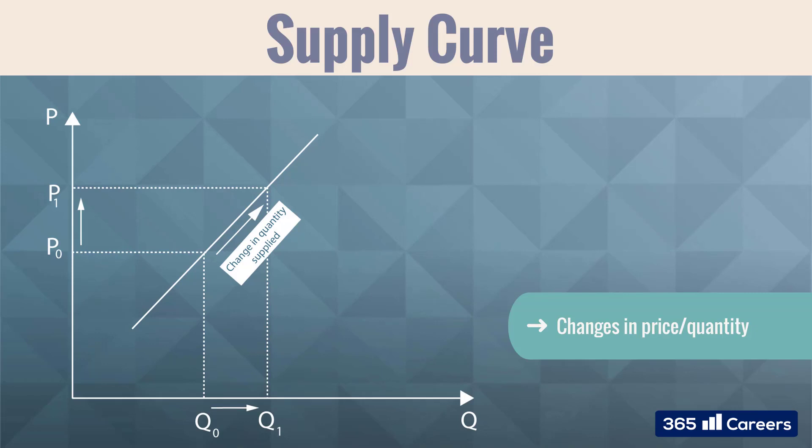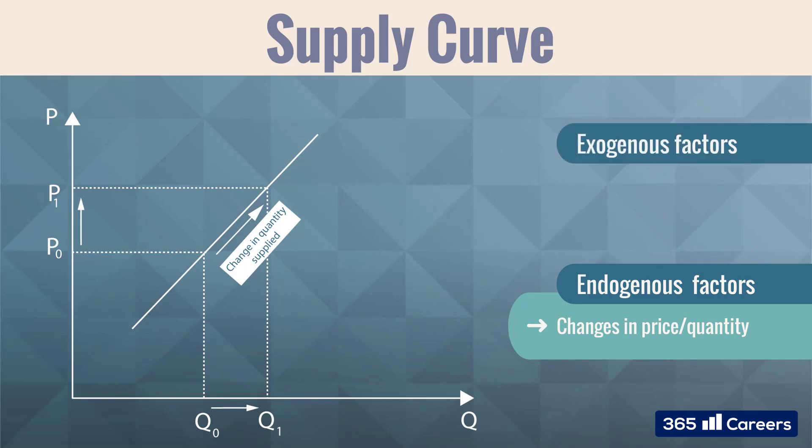Similarly to demand analysis, the price is an endogenous factor. However, the factors exogenous to supply are slightly different. They are related to the cost of production, such as labour or raw material prices. Any change in these factors would cause the supply curve to shift itself up or down.